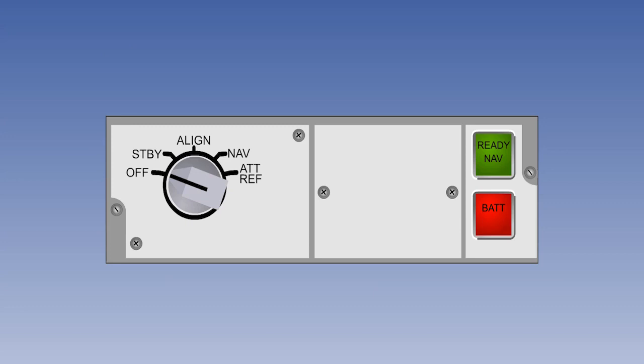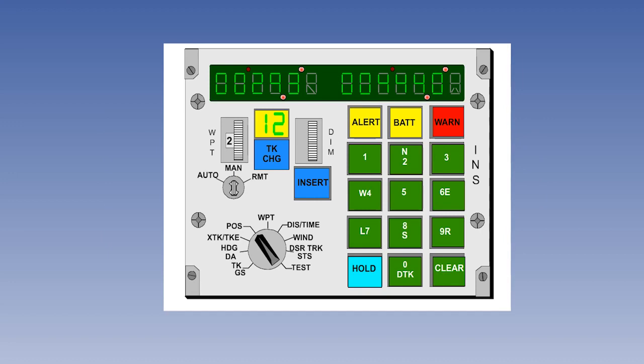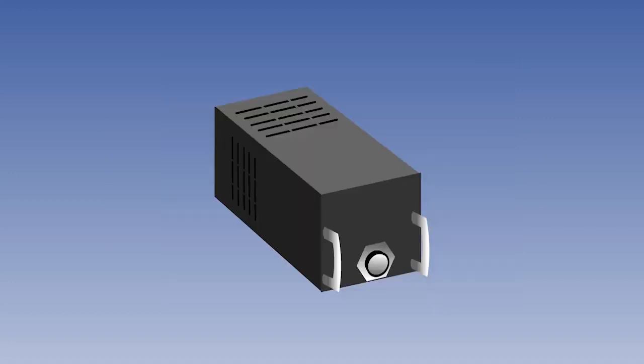The basic units of the INS are the mode selector unit or MSU, the control and display unit or CDU, and the inertial navigation unit or INU.